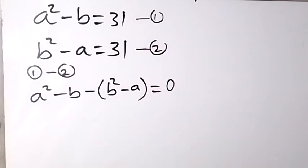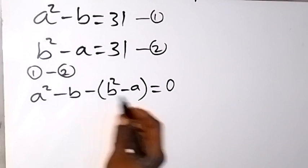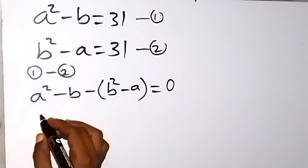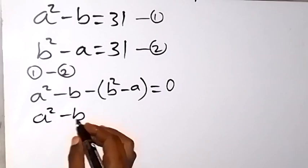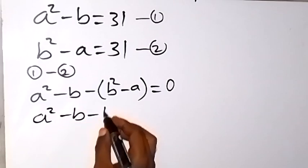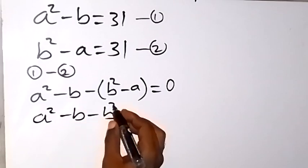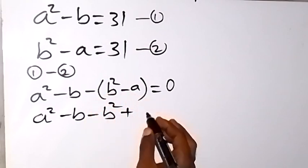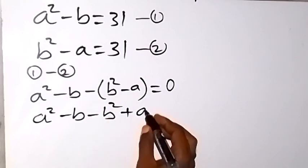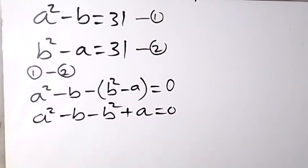When we expand with the minus sign, we have a² minus b minus b² plus a, which equals 0.